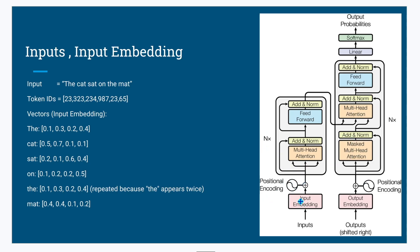After positional encoding, the data is like this vector. Here we take the example of a four-dimensional vector, so the data output is a four-dimensional vector. It adds the position values into it, but it remains a four-dimensional vector. When it passes through the multi-head attention, the output is again the same four-dimensional vector.